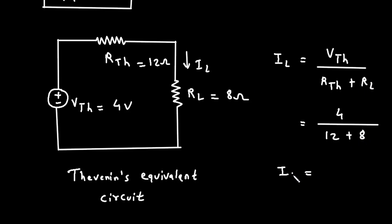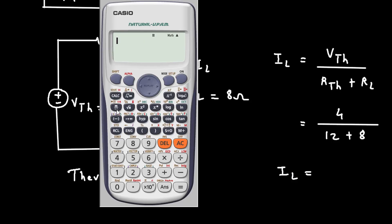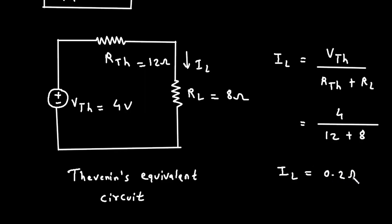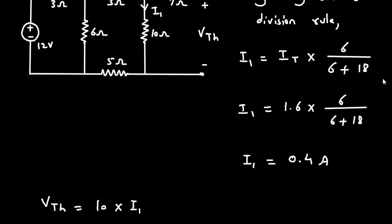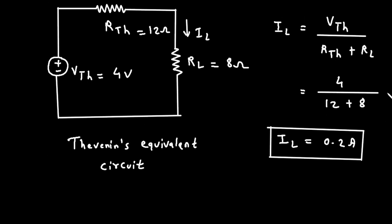The formula to calculate IL is: IL = VTH divided by RTH plus RL. The value of VTH is 4V, RTH is 12, and RL is 8. Solving: 4 divided by 12 plus 8 gives IL = 0.2 Ampere. This is the value of IL found using Thevenin's Theorem. Don't forget to like, share, and subscribe to this channel, and install the app from the link in the description below.